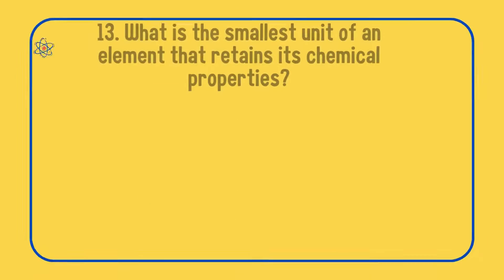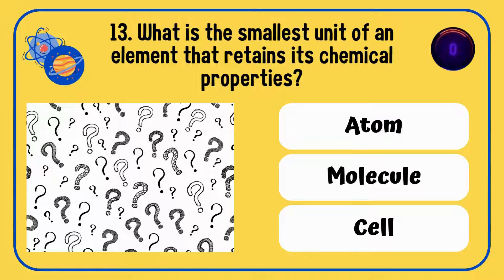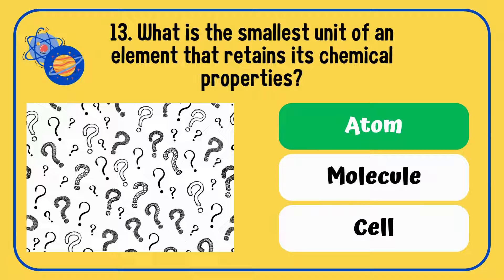What is the smallest unit of an element that retains its chemical properties — atom, molecule, or cell? The correct answer is an atom.